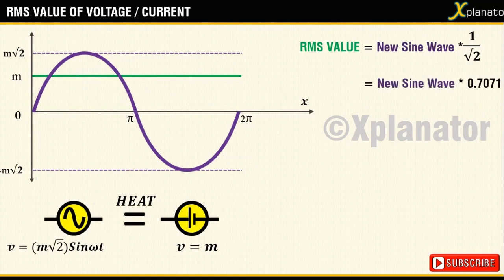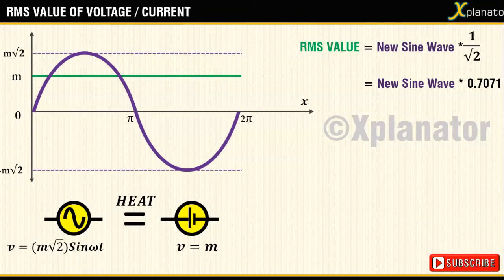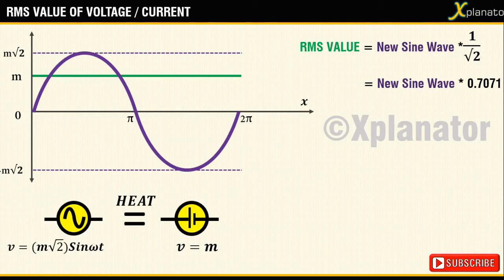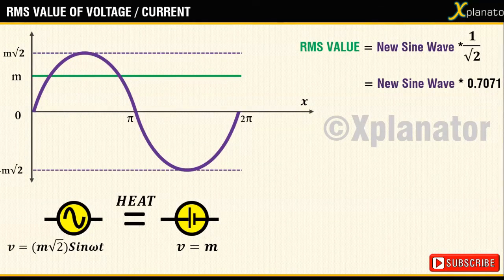And if you take this new wave which has a magnitude m√2 and divide it by √2 as per the definition, you get a value m which is the value of the original DC wave. This is precisely what the textbook derivation says and it holds true even with this area theory.